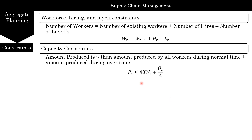Next are the capacity constraints. The amount produced must be less than or equal to the total production capacity from normal time plus overtime. Each worker produces 40 units per month during normal time — derived from 8 hours/day × 20 days = 160 hours, divided by 4 hours per unit = 40 units. Under overtime, total overtime hours divided by 4 gives the additional production. So actual production Pt ≤ 40×Wt + Ot/4.